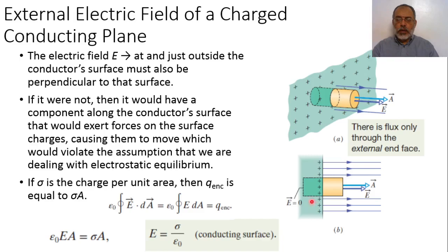We are going to start with a planar surface of conductive material where the charge is uniformly distributed as surface charge density. As we mentioned before, if we have a charged conducting structure, the electric charges will be distributed on the outer surface of the conductor, and there is no excess charge inside the conductor itself. Also, inside the conductor the electric field is zero.